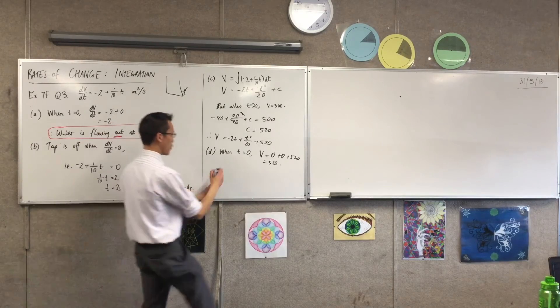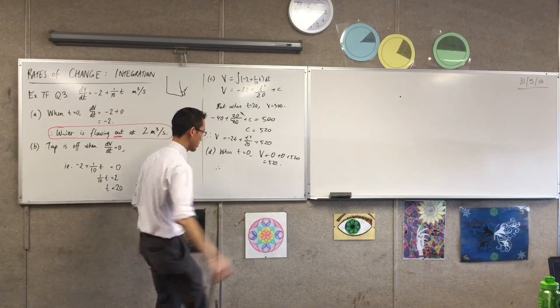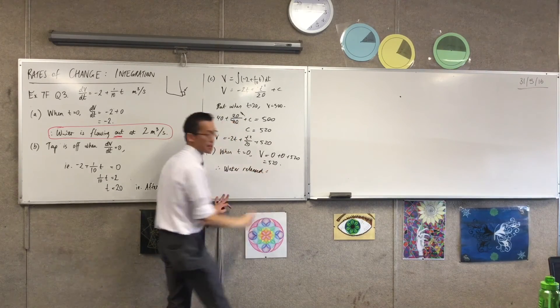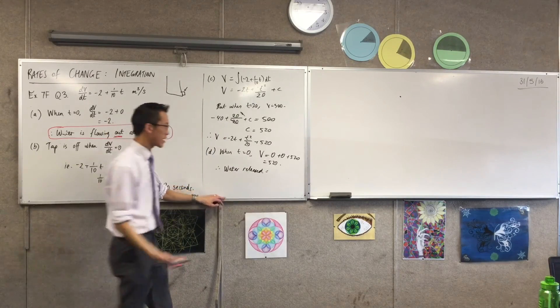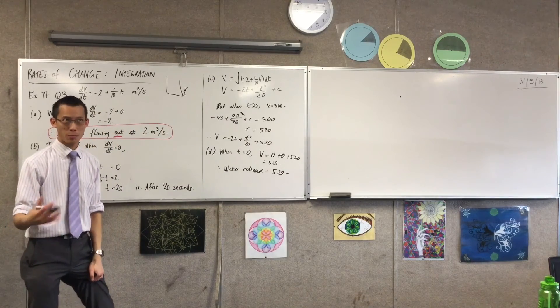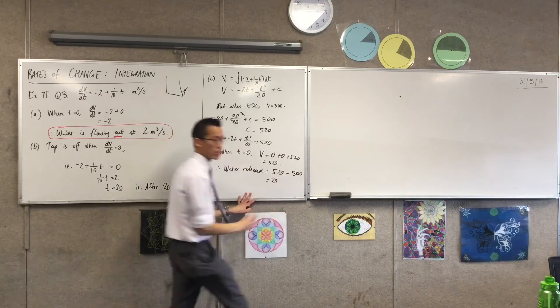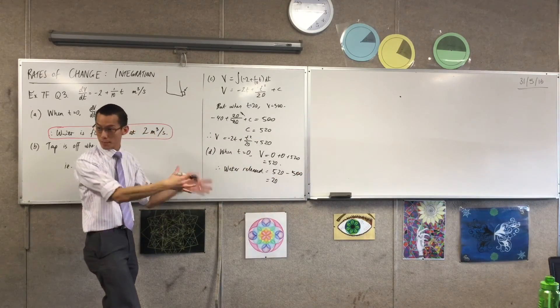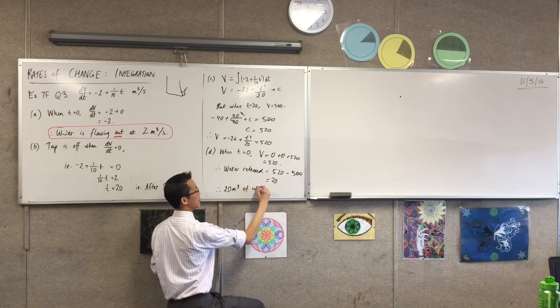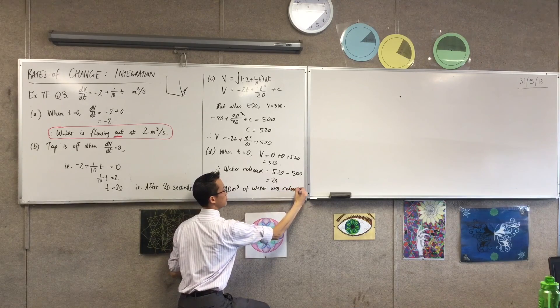So I can say, therefore, what's the wording that they use? The water released. And then all I'm doing here is taking the difference. I began with 520. The question itself told me there were 500 cubic metres left when the tap turned off. So I subtract that, which gives me this. And then I'm going to conclude and bring my units in.